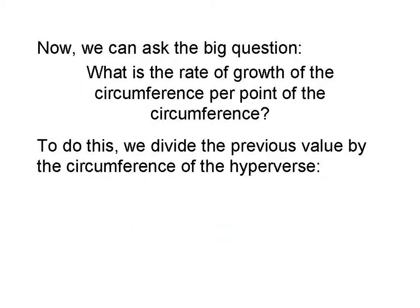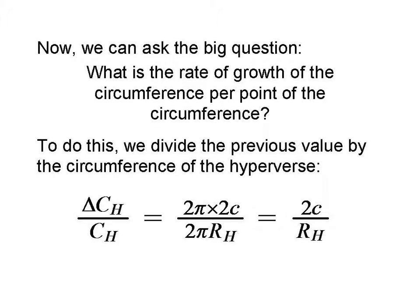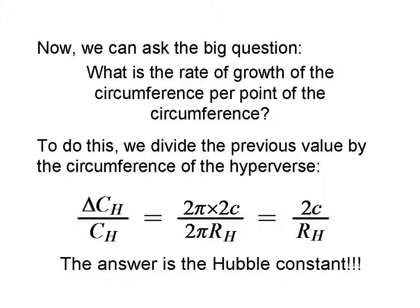We've already calculated that the rate of change of the radius is 2 times the speed of light, 2c. So we can rearrange this equation and find that delta c sub h is equal to 2 pi times 2c. Now we can ask the big question: what is the rate of growth of the circumference per point of the circumference — that is, its fractional increase? To do this, we divide by the circumference of the hyperverse. So we take delta c sub h, which is 2 pi times 2c, and divide it by the circumference, which is 2 pi times the radius. This cancels out and we get 2 times the speed of light divided by the radius of the hyperverse. And that value is the Hubble constant.